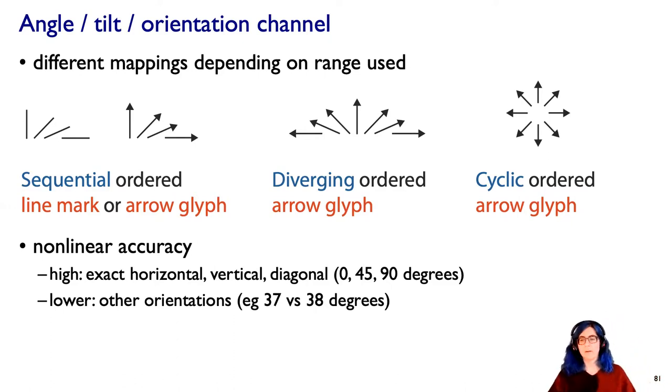The other is that we perceive angle in a nonlinear way. We're really good at noticing exact horizontal, exact vertical, exact diagonal. So you can notice the difference between 90 degrees and 89 degrees.